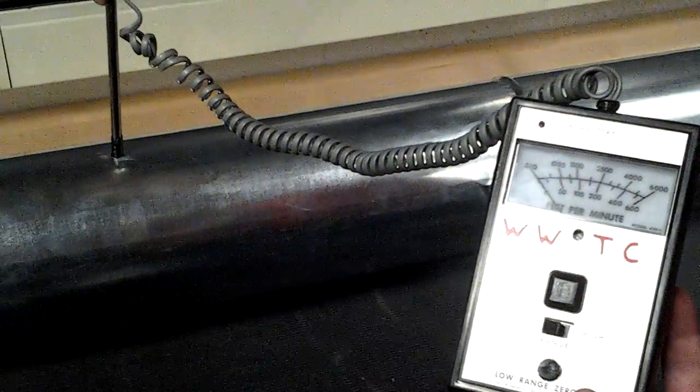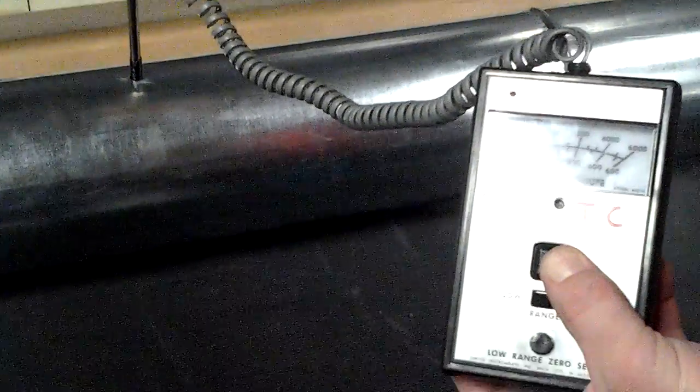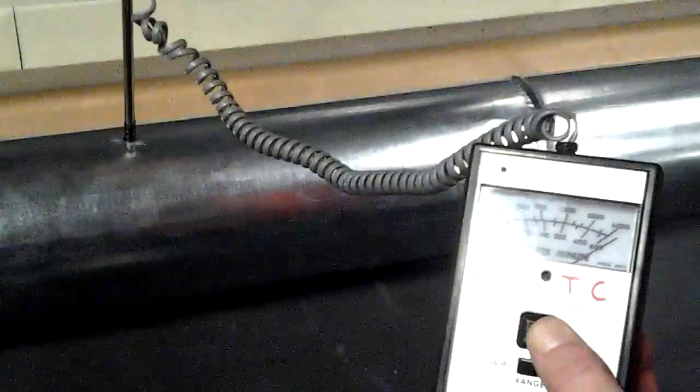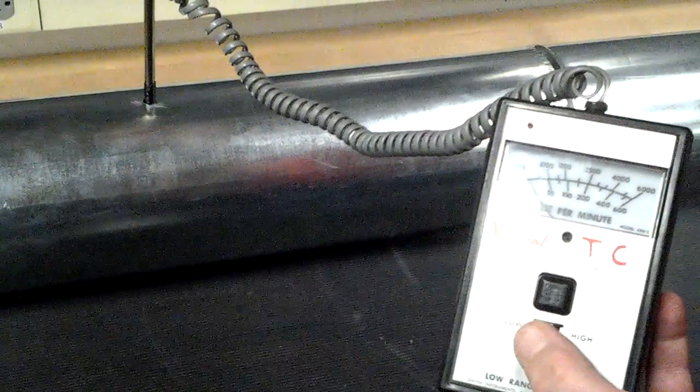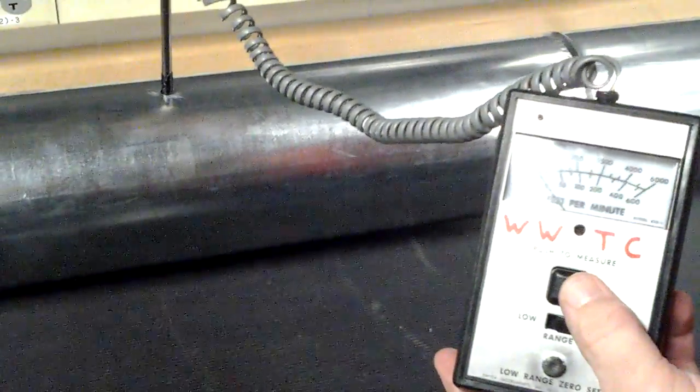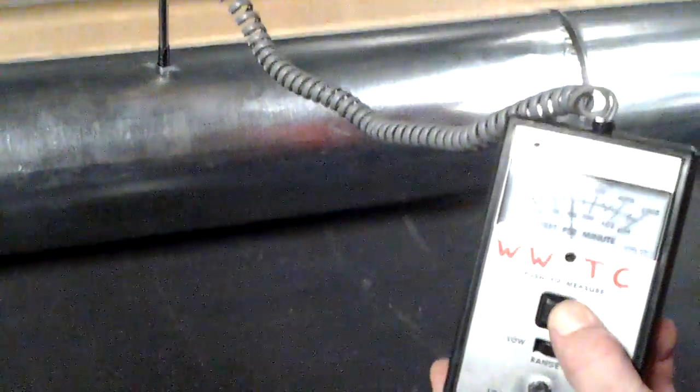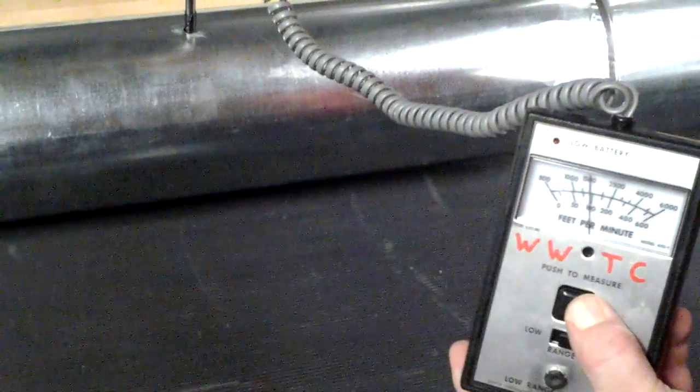Depress the push to measure switch. After a momentary warm-up period, read the measured air velocity on the appropriate scale. With an unknown velocity, measure first in the high range. This time, the meter indicates 1,500 feet per minute.